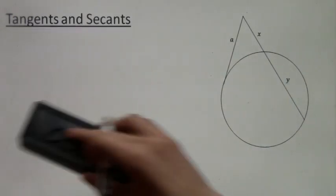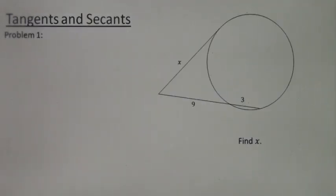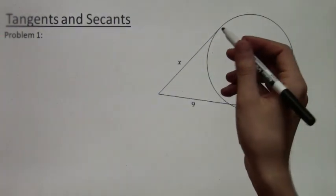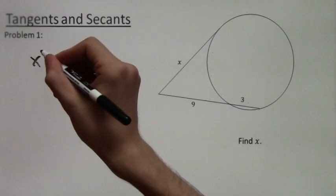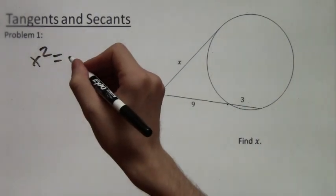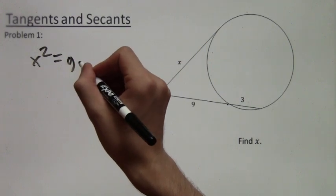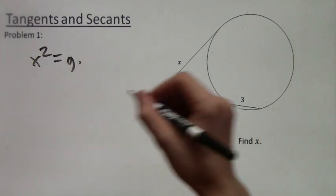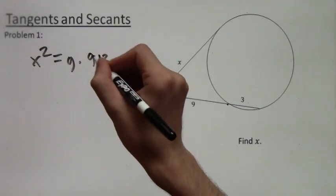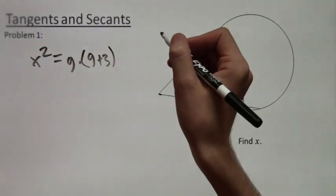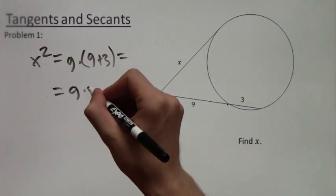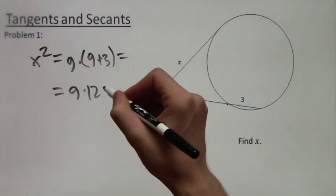So here we're looking for x, and we have x is tangent, so we do x squared equals 9 times, and then the length of the whole secant is 9 plus 3. So we simplify this, and we get 9 times 12, or in other words, 108.